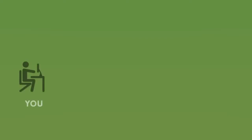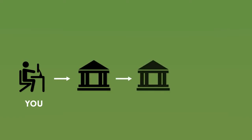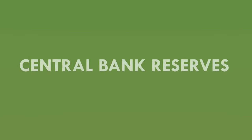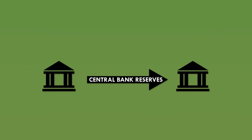Now imagine that you need to pay your rent and your landlord has an account with a different bank to you. When you log into your internet banking and make the payment to your landlord, your bank has to send some money to your landlord's bank to settle and complete the transaction. Of course, the banks don't want to make these payments in physical cash because carrying all this money around is dangerous, even with protected security vans and guards. So instead, they use a type of electronic money called central bank reserves. Remember that name because we'll be using it a lot in this video.